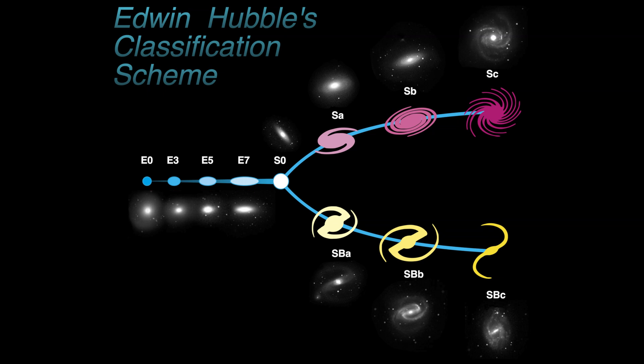E0 represents nearly circular galaxies and E7 represents highly elongated galaxies. Elliptical galaxies are characterised by their lack of structure and more uniform distribution of stars. The right hand branch of the diagram represents the spiral galaxies, further divided into two subcategories: normal spirals and barred spirals. Normal spirals have a central bulge and two or more spiral arms, while barred spirals have a central bar-shaped structure with spiral arms extending from the ends.